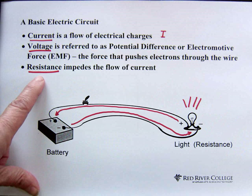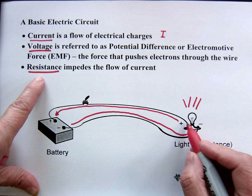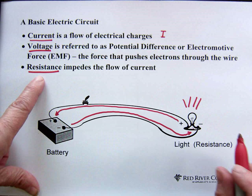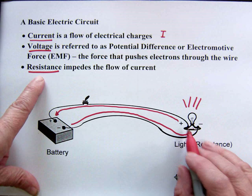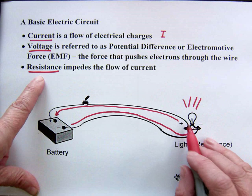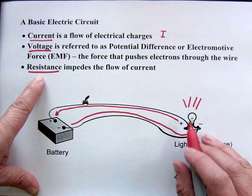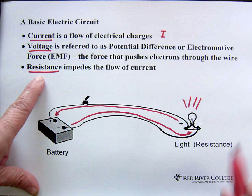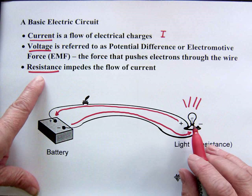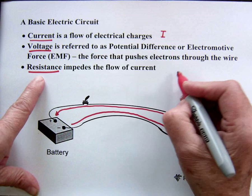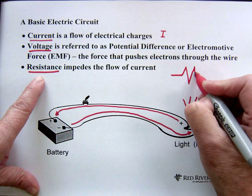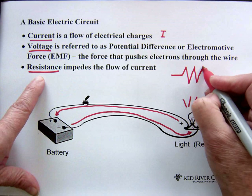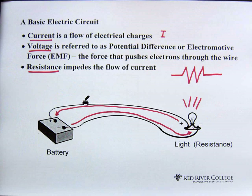Resistance impedes the flow of current. When we have this light here, it creates resistance. And as a result, there's a voltage drop across that light, and that is what causes the light to turn on. The symbol for resistance in a circuit diagram looks like a zigzag line. That's the symbol for resistance.